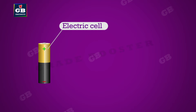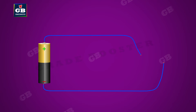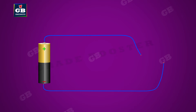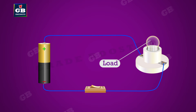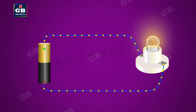A general electric circuit contains: one, an electric cell — it is a source of electricity; two, wire — it is the conductor of electricity; three, a switch — it is the controller of electricity; four, a load — it is the user or final converter of electricity. When the circuit is closed, the electric charge from the cell is passed through the wire to the bulb, which makes the bulb glow.